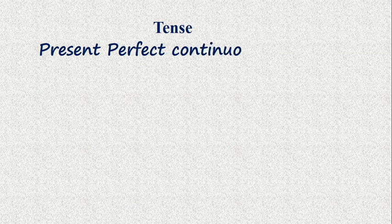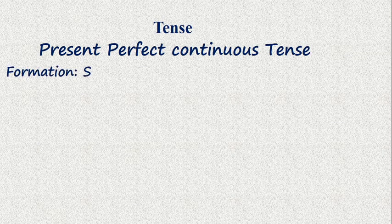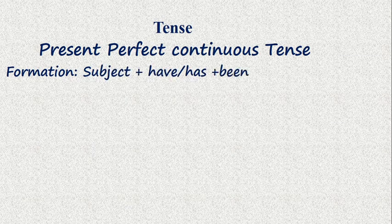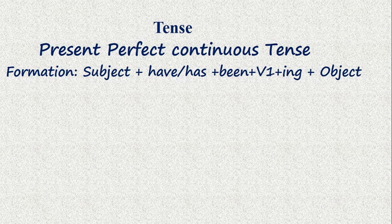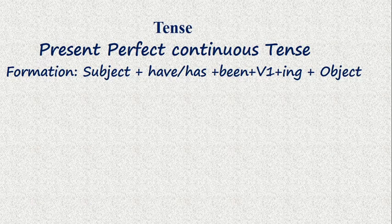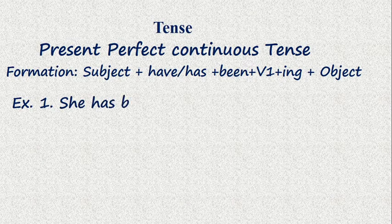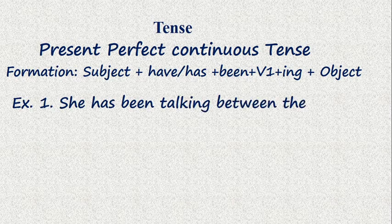Okay, present perfect continuous tense. The formation of the present perfect continuous tense is subject plus have/has plus been plus base form of the verb plus ing plus object. Here are two examples: she has been talking between the lecture, and they have been playing for the country.